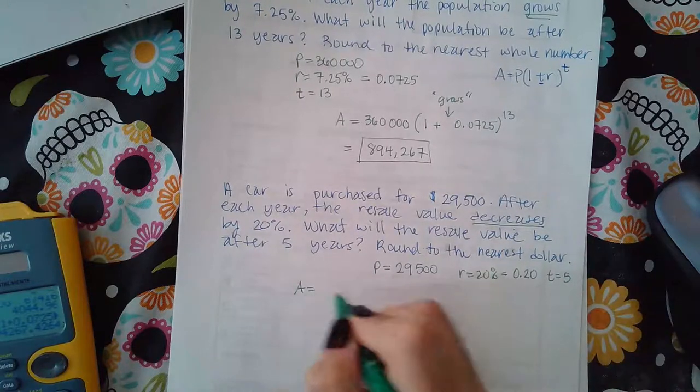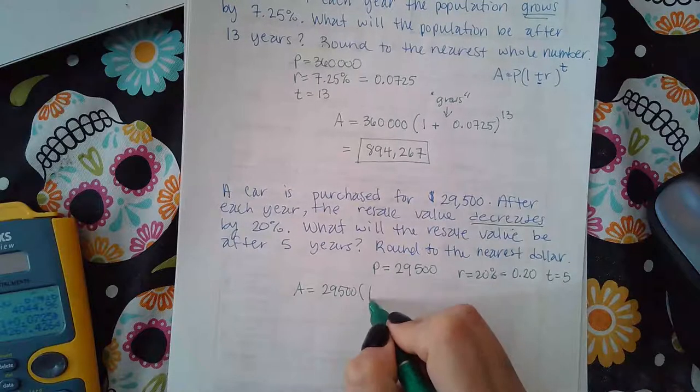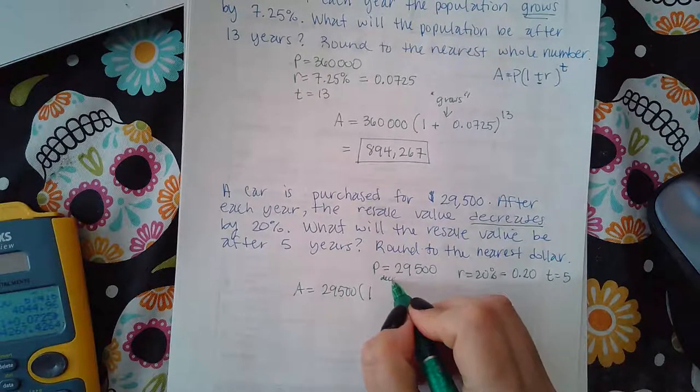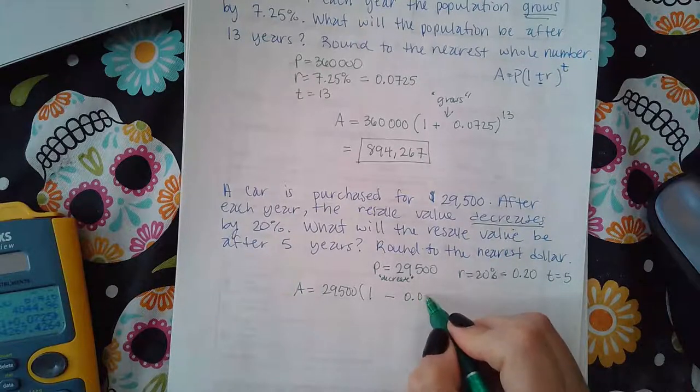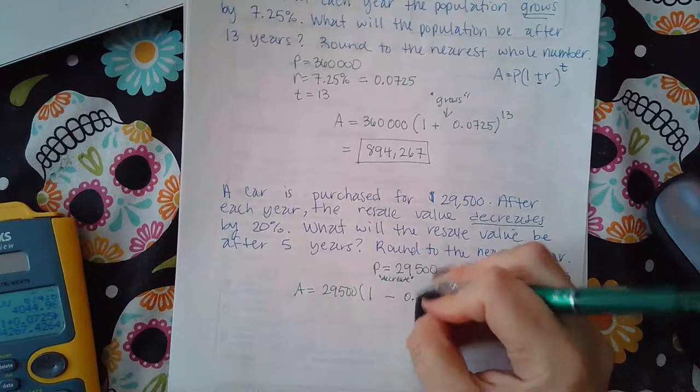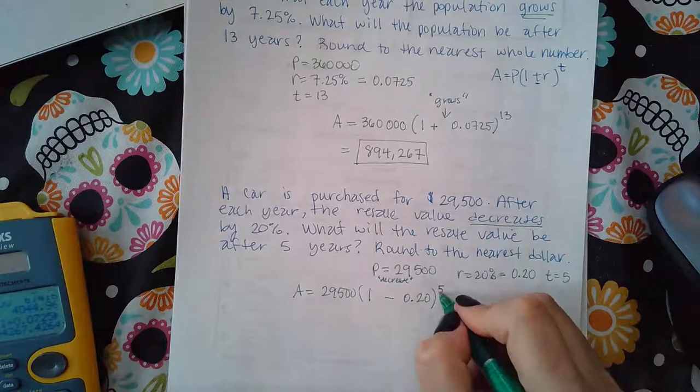So if I plug everything into that formula, it's going to be 29,500 times 1. And because it said decreases, I'm going to use a minus sign, 0.20. And then, I'm going to raise it to the fifth power.